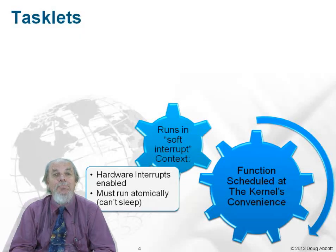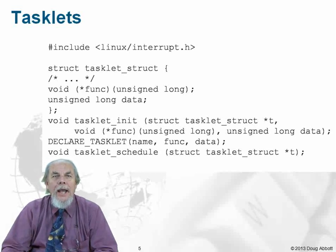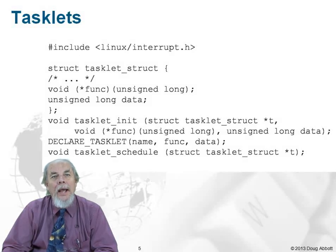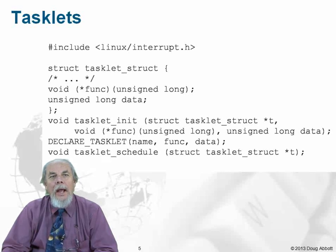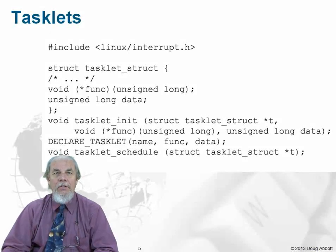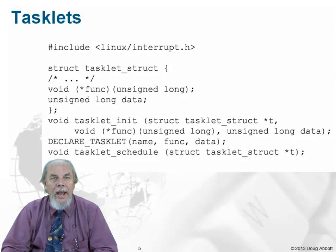But a tasklet must run atomically — it still can't sleep. A tasklet is represented by a structure that includes, among other things, a pointer to a function and a data argument to pass to that function. We initialize that structure with a call to tasklet_init or the DECLARE_TASKLET macro. And then when we want to schedule the tasklet, we call tasklet_schedule, passing in a pointer to that tasklet structure.